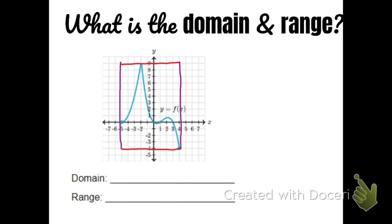The domain is the right and left of the picture frame — how far does this picture go to the right and to the left? What are the right and left borders of our graph? It goes all the way from negative 5 to 4. The x values are in between negative 5 and 4, so I'll put less than or equal signs there, saying x is scrunched in between negative 5 and 4.